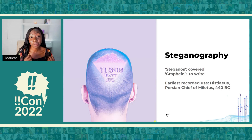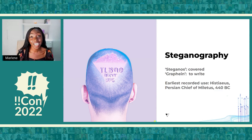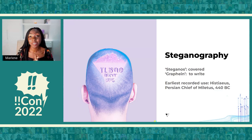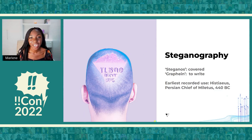One of the earliest recorded uses of steganography dates back to 440 BC, when Hystaeus, the Persian chief of Miletus, shaved the head of one of his servants and tattooed a secret message on the servant's scalp.